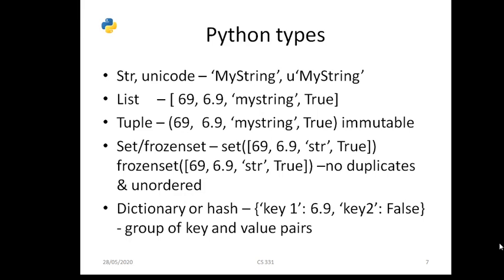In C language, available data types include integer, float, and characters. Similarly in Python, arrays are available as lists, and tuples — which are mutable — are also available. Sets are available. Lists and arrays store numerical and non-numerical values. Dictionaries, or hash functions, store pairs of key-value pairs. We will see these in detail later.